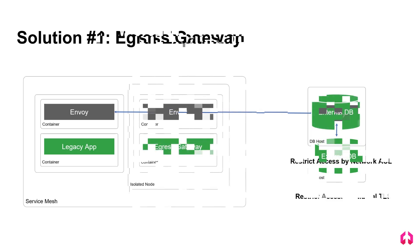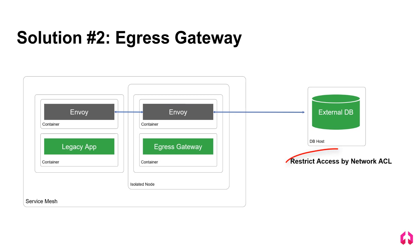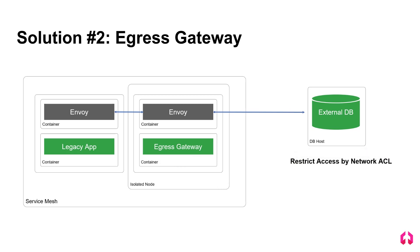The second solution is to use an egress gateway. In this case, we've deployed an egress gateway on an isolated node in a Kubernetes cluster that will send traffic to the database. The database will only trust the node where the egress gateway is running, and the service pods are restricted from running on that privileged node. The downside is that you have to allocate dedicated resources for your egress gateway to secure the communication.